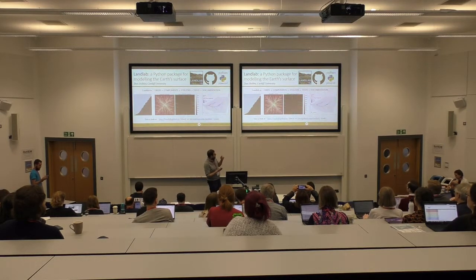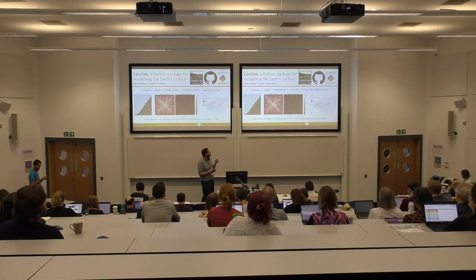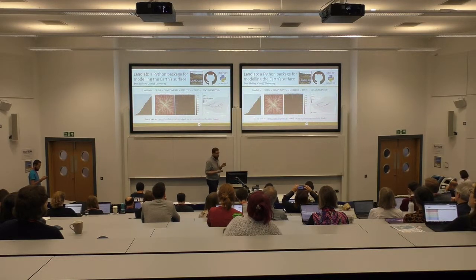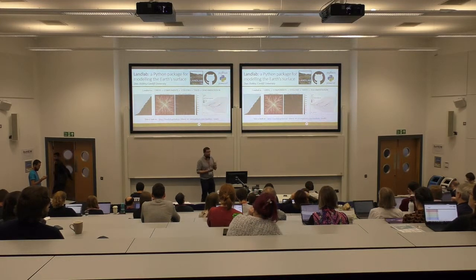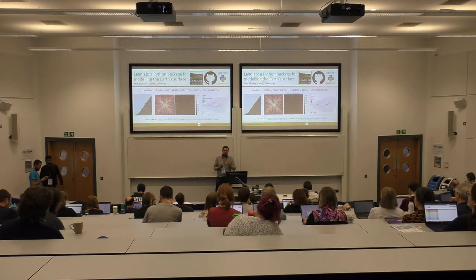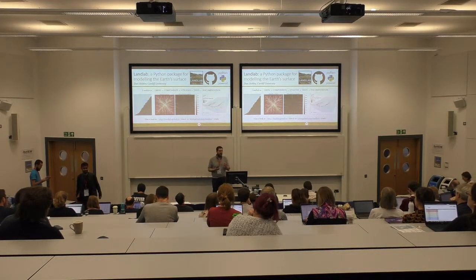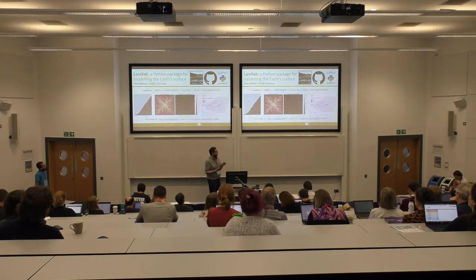I'll show you in a second with some examples, but under the hood what Landlab actually is, is a gridding engine where you can define how some property varies across the surface — typically maybe elevation — and also describes the topology of that grid. It's also a set of components that do the heavy lifting of describing how Earth's surface processes work: how water and sediment move around on the surface of the Earth in order to create piles of sediment and to create landscapes.